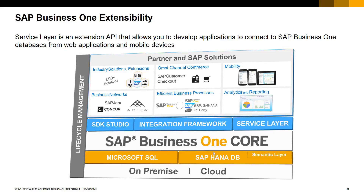SDK Studio provides a set of tools and APIs to extend SAP Business One Core functionality with add-ons. The integration framework provides a framework to integrate SAP Business One with other applications. The third block refers to the SAP Business One Service Layer API, which will be covered in this session. On top of these three extensibility blocks, we can find different industries, solutions and extensions, mobile applications, Ariba integration scenarios, etc., developed either by SAP or SAP partners using the extensibility APIs and the integration framework.